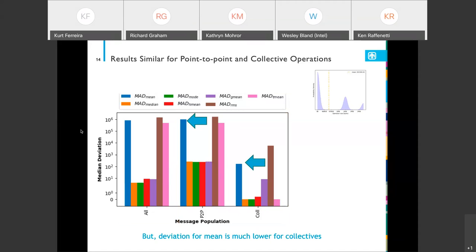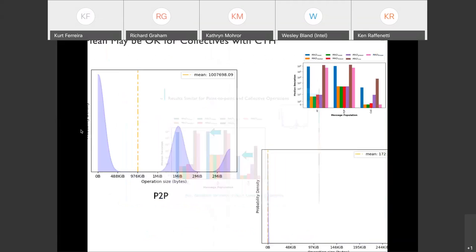One thing that is important to note: if we look at the fitness for the arithmetic mean for the point-to-points versus collectives, we see that for collectives the fitness for the arithmetic mean is significantly lower. In fact, it's on par with the fitness for the median for point-to-points. So we wanted to look at why that might be.